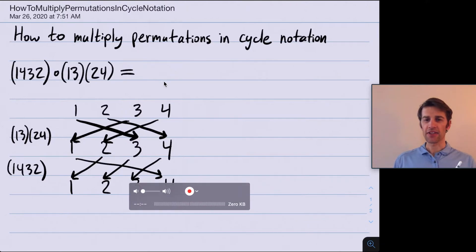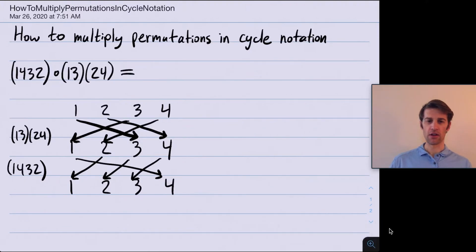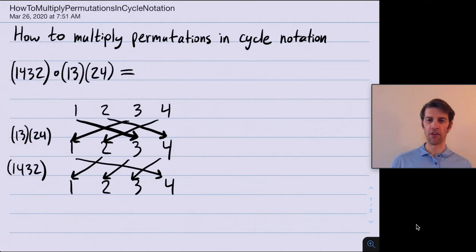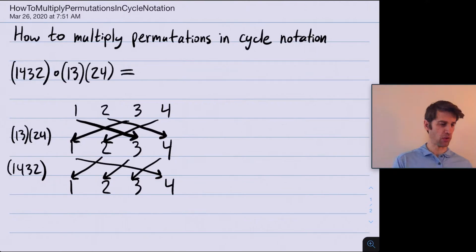So the answer on the right-hand side we can already figure out. The way we do this is to compose these braids together — we follow 1 all the way down, follow 2 all the way down, follow 3 all the way down, and follow 4 all the way down.